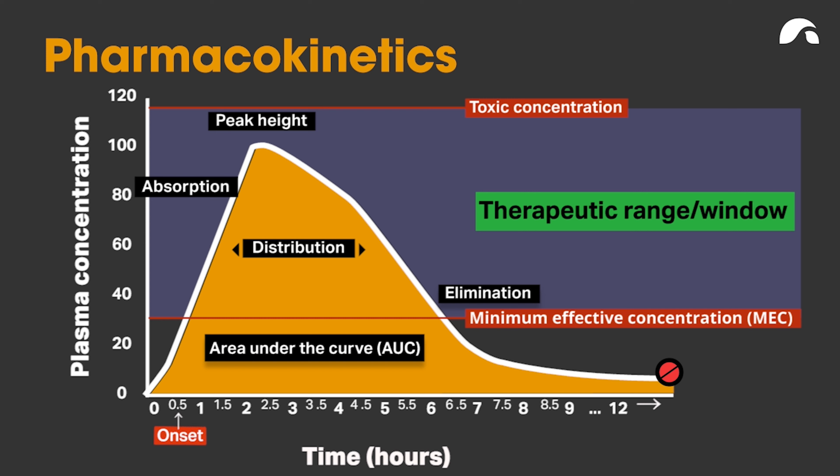At the bottom of the graph you can see the onset of action, which is when the absorption curve crosses that minimum effective concentration line. Then a bit further along you see the termination, or offset as it is sometimes called, and that is when there is not enough medication left for it to have an effect on you. In other words, that marks when the medication will no longer be effective. The time between onset and termination is the length of time that the medication will have at least some pharmacological action.